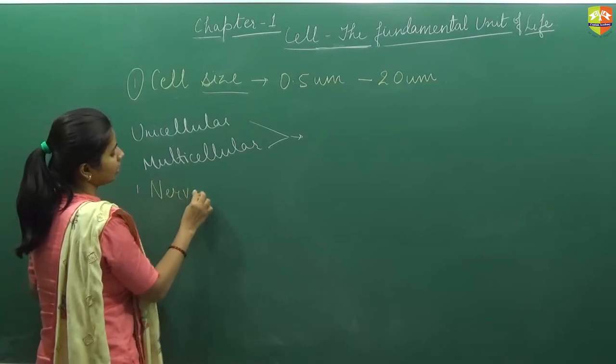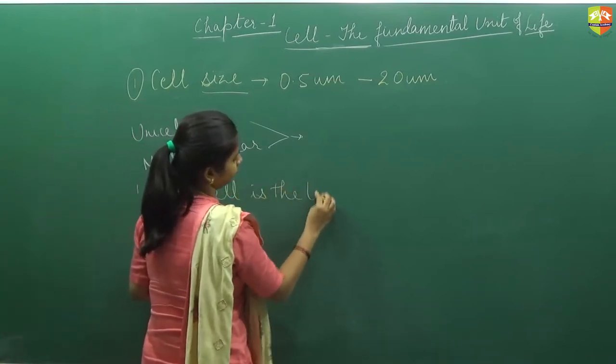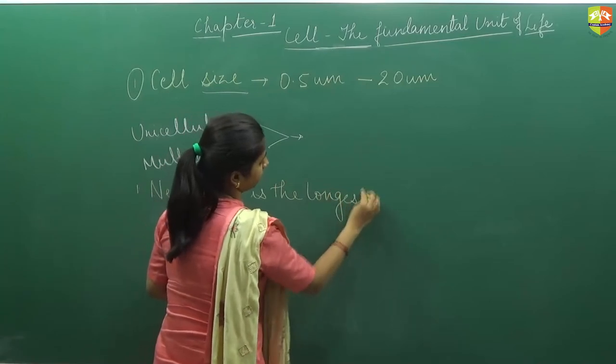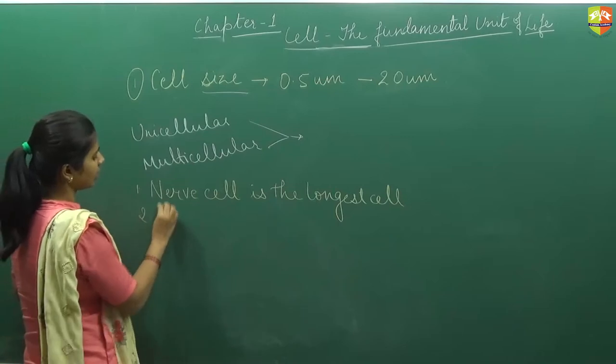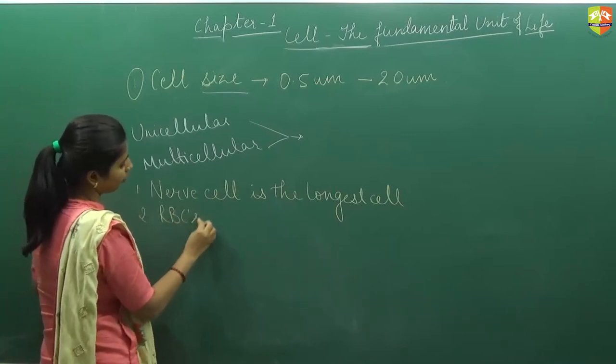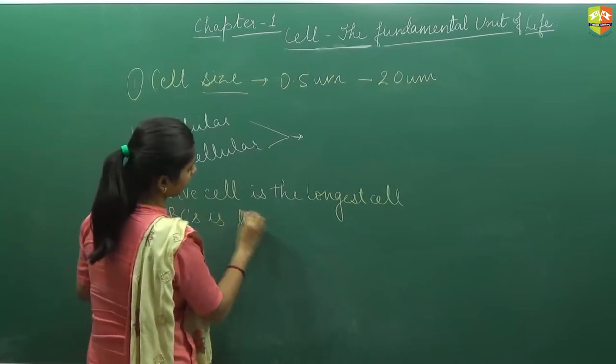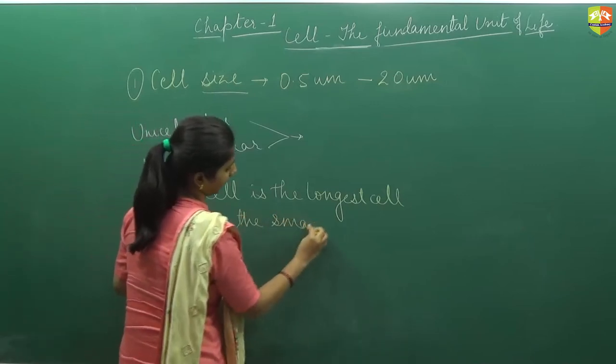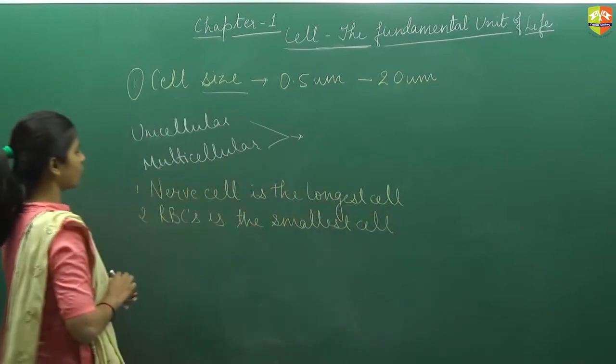Starting with human body. Nerve cell is the longest cell. And the smallest cell is the RBC. The form of RBC is red blood corpuscles. This is the smallest cell in our body. This was the case of human.